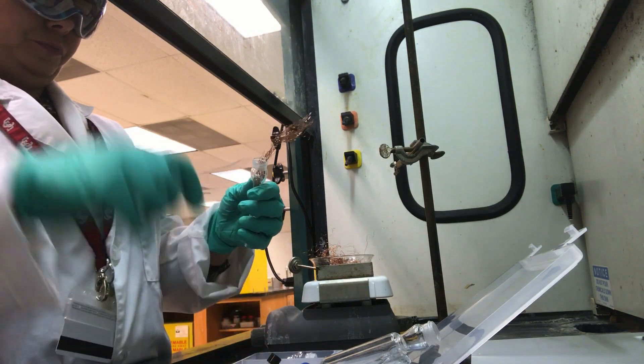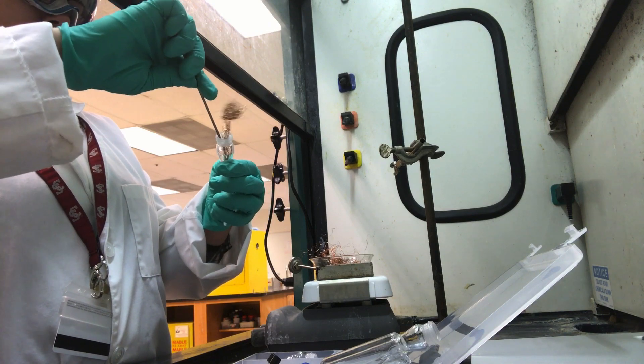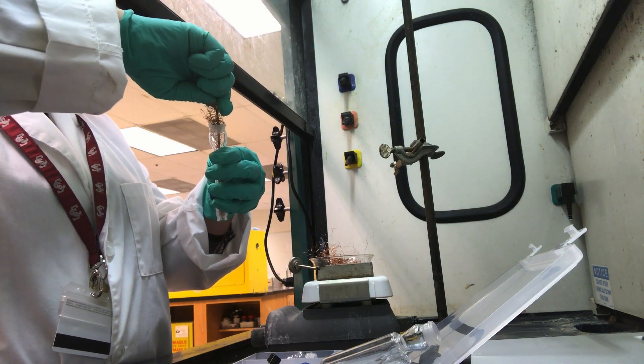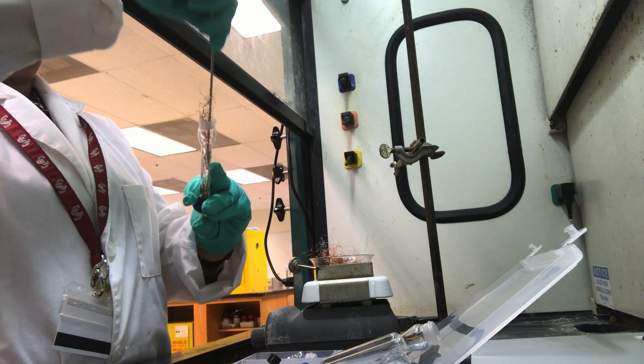A loose fitting of copper wire is pushed into the condenser using a microspatula, and any excess copper is trimmed from the top using scissors.